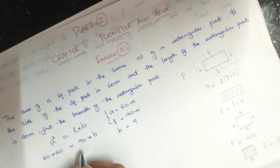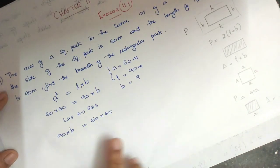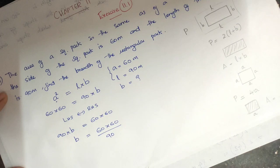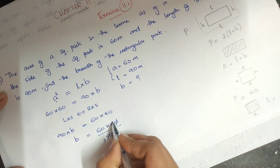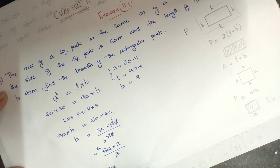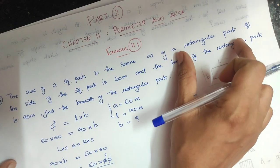I will interchange the LHS and RHS. So, 90 into B equals 60 into 60. Therefore B equals 60 into 60 divided by 90. Now 9 and 6: 3 is divisible — 3 goes into 9 three times, and into 6 two times. So B equals 60 into 2 by 3, which equals 20 into 2, equal to 40 meters. That is the breadth. The area of the square park and the rectangular park are equal.